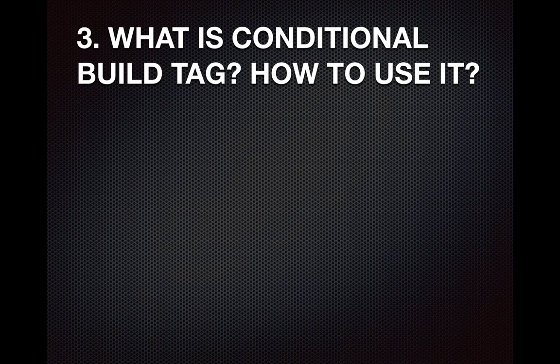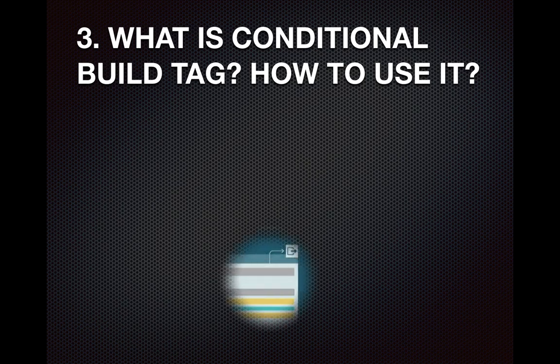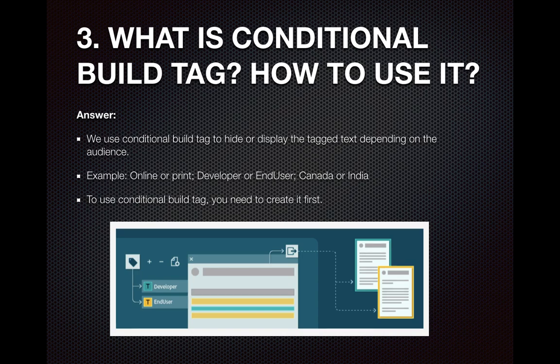Question number three: What is a conditional build tag and how to use it? We use conditional build tags to hide or display content depending on the audience — for example, whether it is online or print, whether it is going to be used for developers or end users, or whether it is based on location such as Canada or India. To use a conditional build tag, you need to create it first.